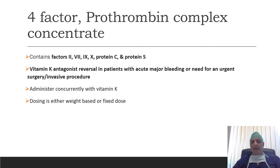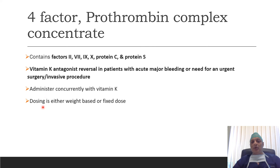Lastly, briefly touching on another component — 4-factor prothrombin complex concentrate. It contains factor II, VII, IX, X, and protein C and protein S. It is useful for vitamin K antagonist reversal in patients with acute major bleeding, or whenever there is need for urgent reversal for surgical or imaging procedures. It is administered concurrently with vitamin K, and dosing is either weight-based or fixed-dose.